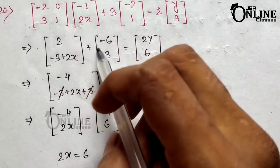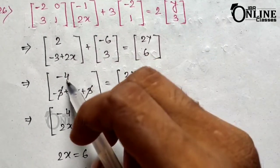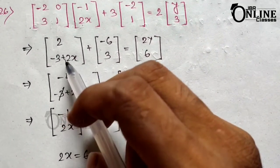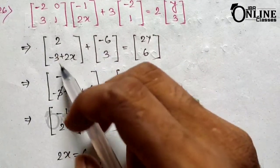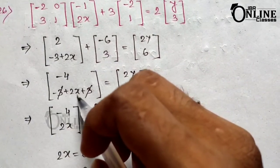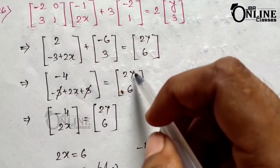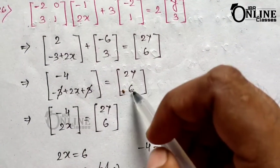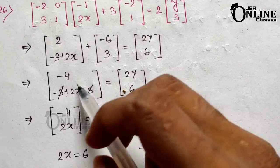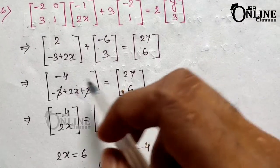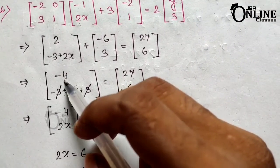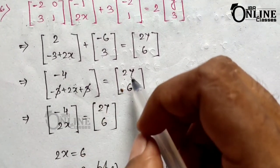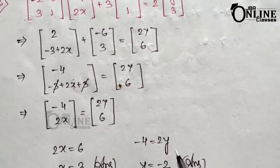Now for the addition of the two matrices: 2 plus minus 3 equals minus 4, and minus 3 plus 2x plus 3 — the 3s cancel out — so that becomes 2x. That equals 2y plus 6. Comparing these two matrices, we get minus 4 equal to 2y.